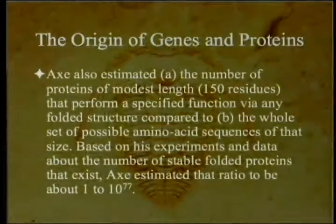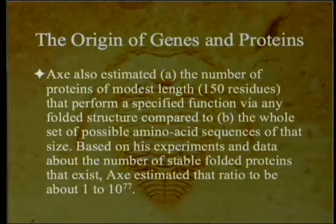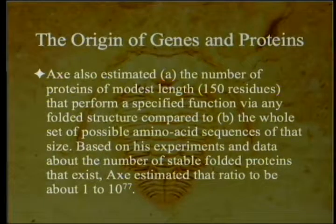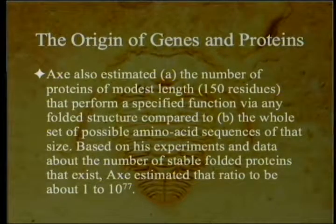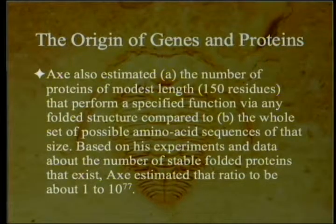This is not even asking whether the protein does a job — just asking whether it will fold so that it can do a job. Axe also estimated the number of proteins of modest length — 150 residues — that form a specific function via any folded structure, compared to all possible amino acid sequences of that size. Based on his experiments and data about the number of stable folded proteins that exist, Axe estimated that ratio to be about 1 in 10 to the 77th — meaning about a thousand times as many folded proteins as proteins that actually do something.